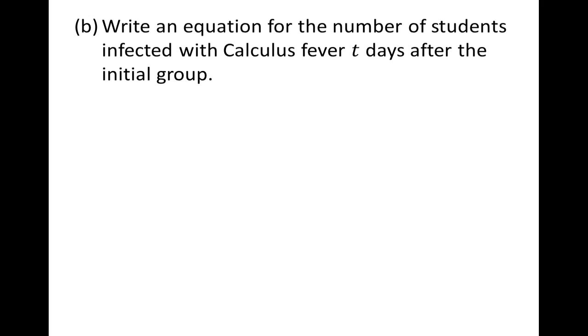The second problem: write an equation for the number of students who have been infected with calculus fever t days after the initial group of 10 students were diagnosed. For this, we get to go to the equation that we've already derived. Here is the formula, p equals m over 1 plus a e to the negative kt, and a is that constant. We know m, we know the initial population, so we can find a, and we plug everything in.